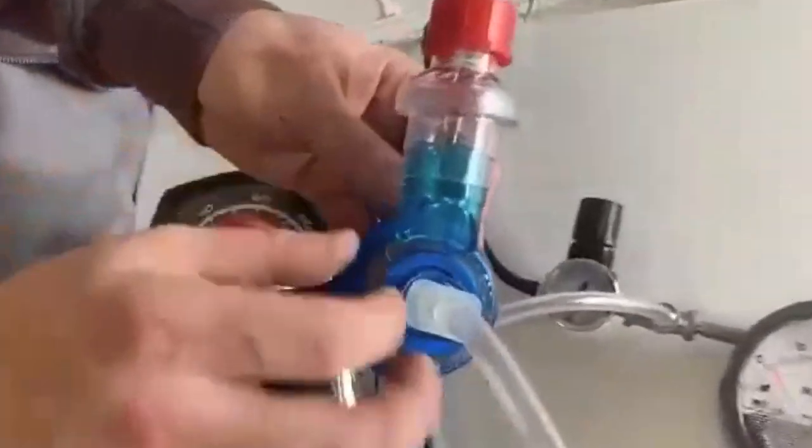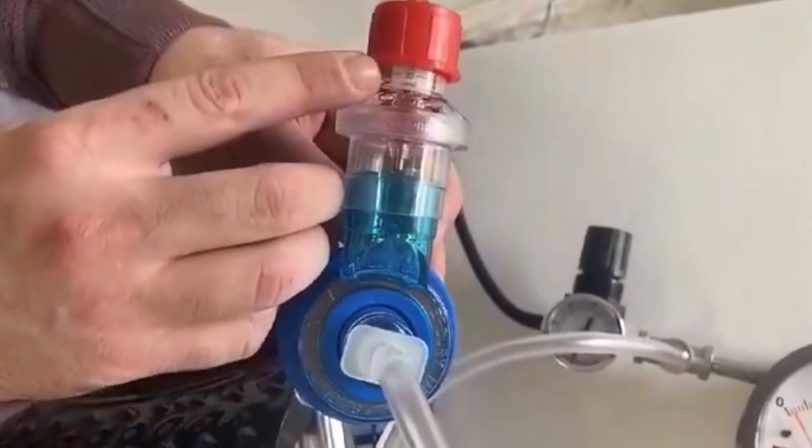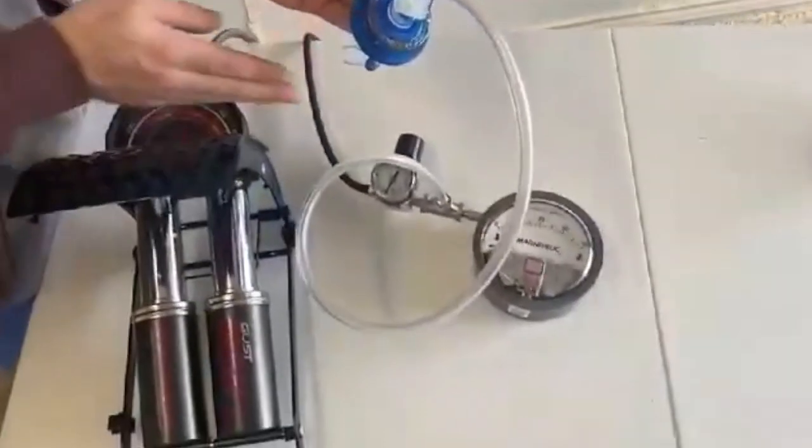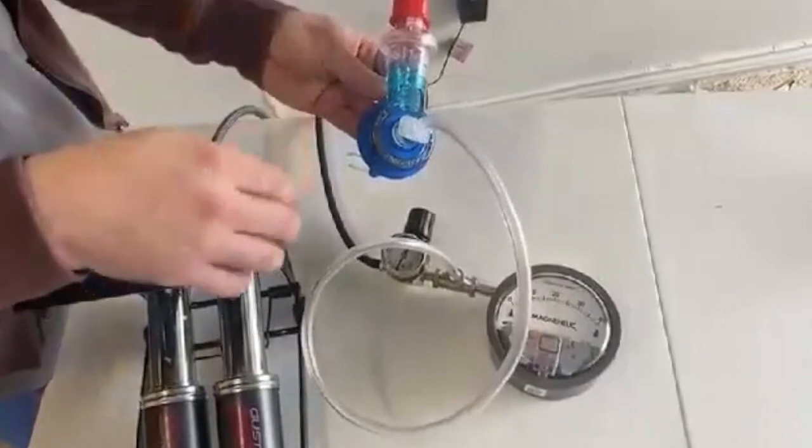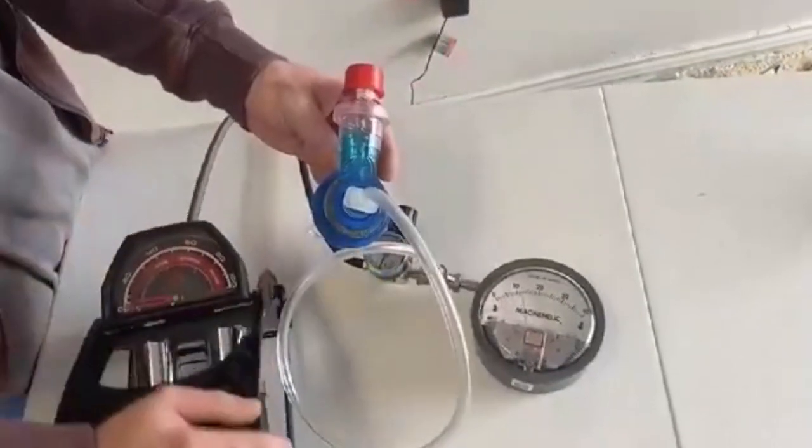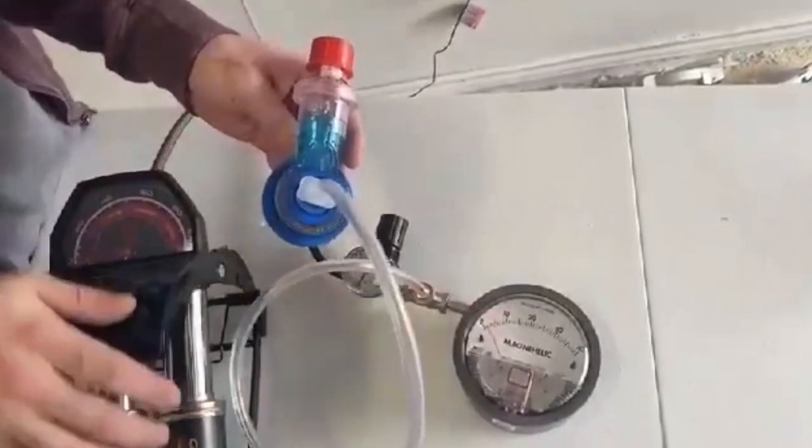Now I attach to the system a regular PEEP valve and set it to 15 centimeters of water so that when the pressure goes through the system at 15 centimeters water it will escape. So if we take a look at the scale, it should only go till 15.